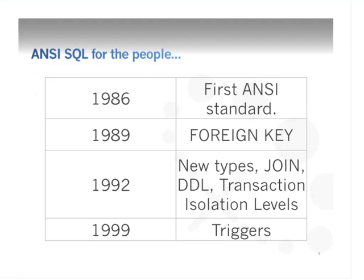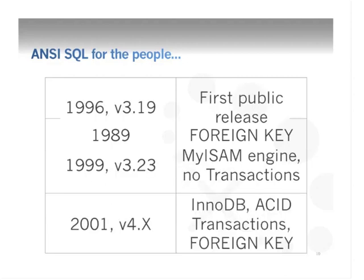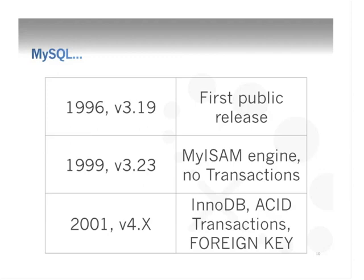In the second half of the 90s, these ideas advanced in the commodity databases that people would use — not the mainframe systems IBM was creating, but commodity databases. The most famous of those in the open source world has been MySQL. They had the first public release in 1996. By 1999, they had the iSAM engine but still no transaction support. In 2001, InnoDB became the default and we got ACID transactions and foreign key constraints for referential integrity.